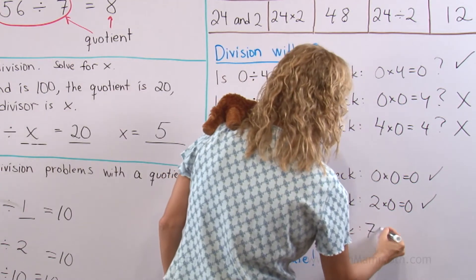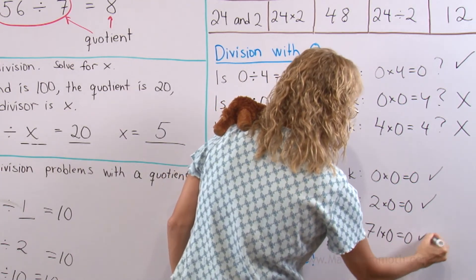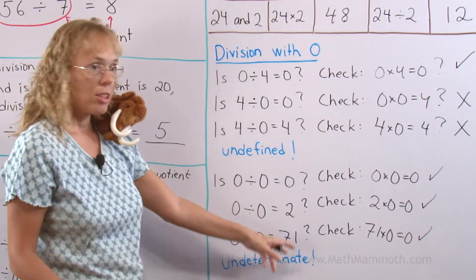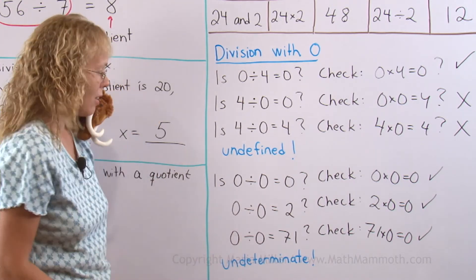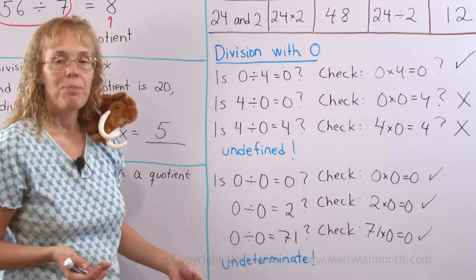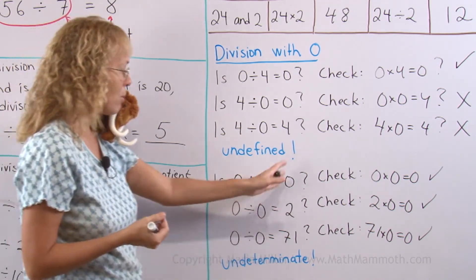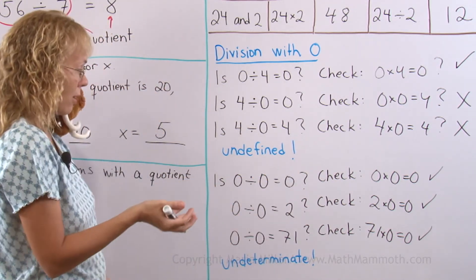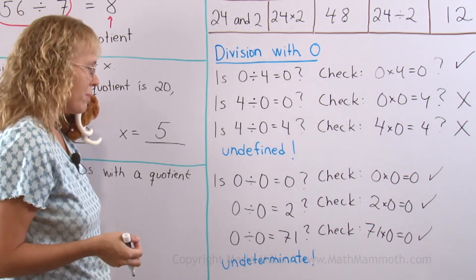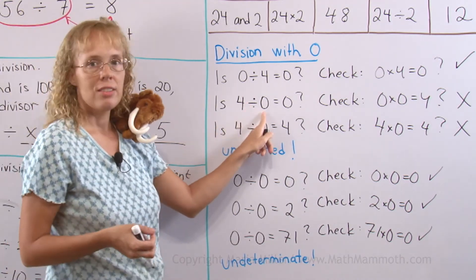This one, 71 times 0 is 0. It's like any answer here would work. And then that's when we say that it is indeterminate. We cannot determine any single answer. Because just about any number as an answer would work.